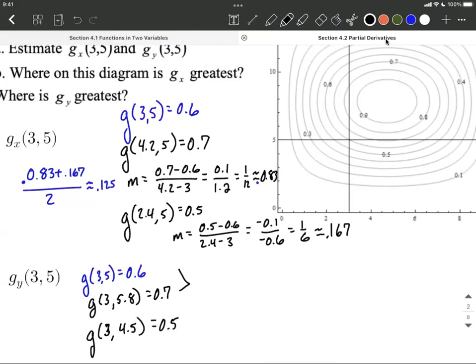So if I put these first two together and find their slope, it's going to be 0.7 minus 0.6. Now, the things that changed this time were our y values because we're doing the partial with respect to y, so 5.8 minus 5. So 0.1 divided by 0.8 works out to be 1 eighth, or that's exactly 0.125.